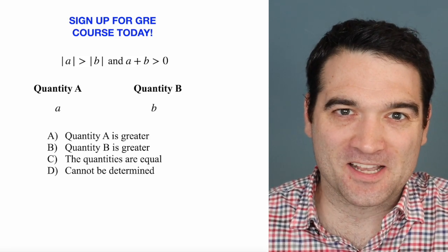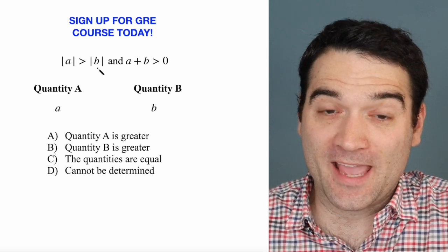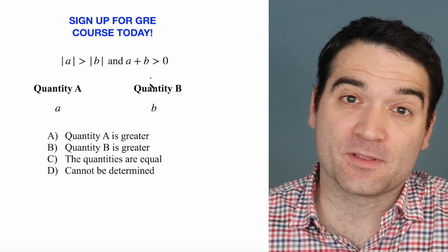Here's a GRE algebra question. Let's take a look. The absolute value of A is greater than the absolute value of B, and A plus B is greater than zero.